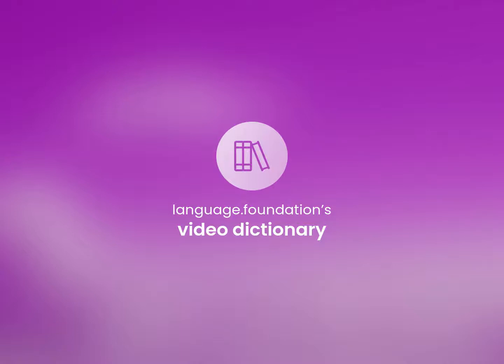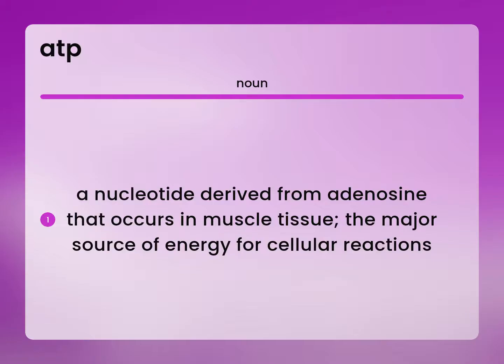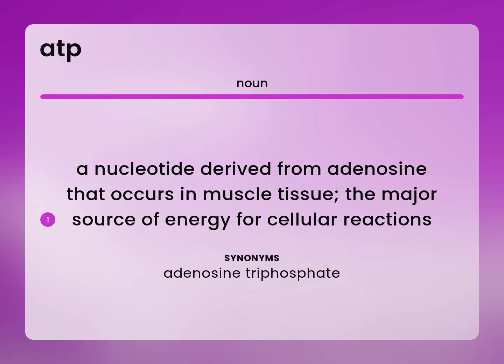Language.Foundation's Video Dictionary, helping you achieve understanding. A nucleotide derived from adenosine that occurs in muscle tissue, the major source of energy for cellular reactions. Adenosine triphosphate.